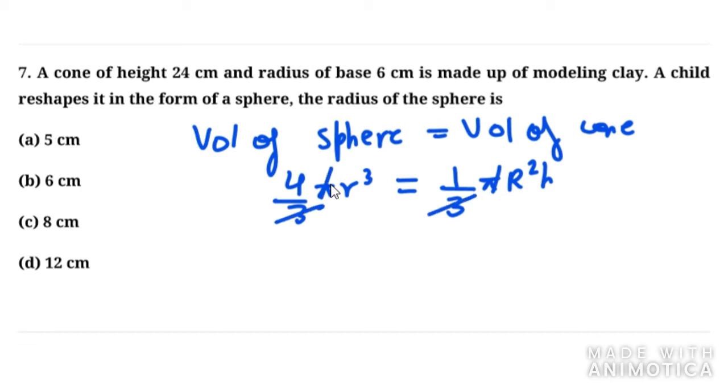Pi and pi gets cancelled out, 3 and 3 gets cancelled out. 4 r cube on the left hand side, r square that is 6 square equals 36, h is 24. So r cube equals 36 into 24 over 4.